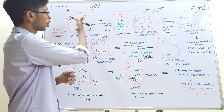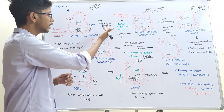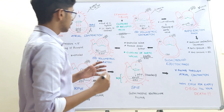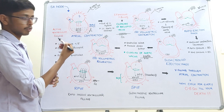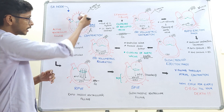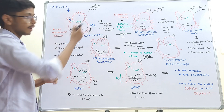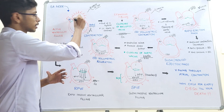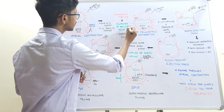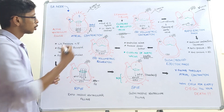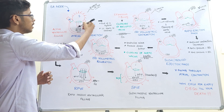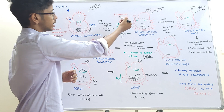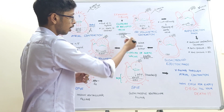When the atria complete their contraction — the end of atrial systole — the left ventricle starts to contract as impulses transmit to the ventricle. Initially, the pressure inside the atria is around 5 mmHg, but the pressure inside the ventricle is less than the atria, so blood moves from atria to ventricle. When the ventricle starts contracting, its pressure builds up. When ventricular pressure exceeds the atrial pressure of 5 mmHg, the bicuspid valve closes to prevent backward flow from ventricle to atria, producing the first heart sound, S1.